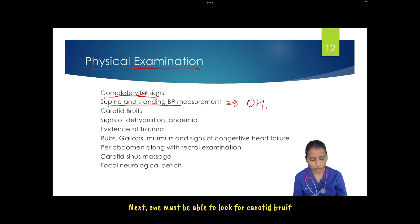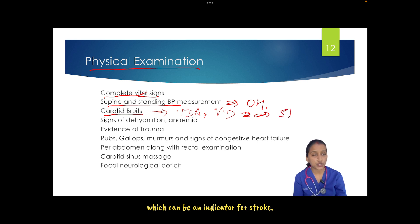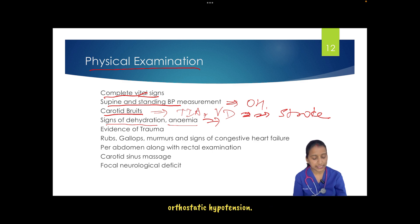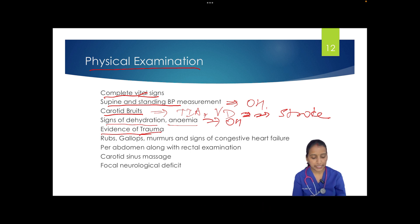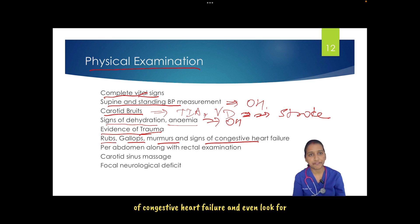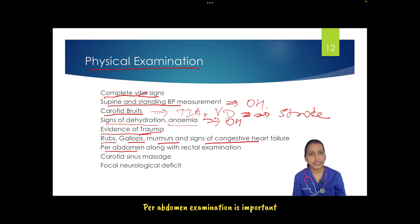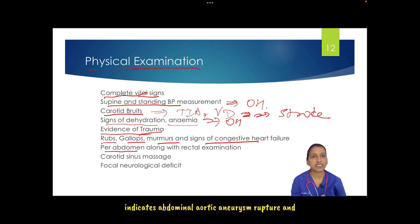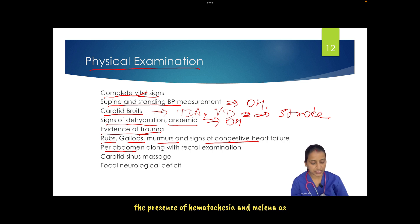One must look for carotid bruit to rule out transient ischemic attack as an indicator for stroke. Look for signs of dehydration and anemia to rule out orthostatic hypotension. Complete head-to-toe examination for evidence of trauma is needed. In cardiac examination, look for rubs, gallops, murmurs, signs of congestive heart failure, and pneumothorax. Per abdomen examination is important to rule out a tender pulsatile mass indicating abdominal aortic aneurysm rupture, and rectal examination for hematochezia and melena.